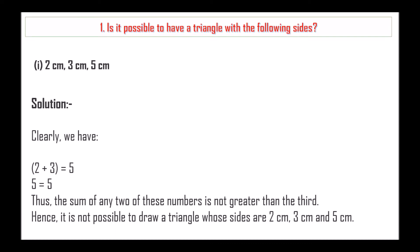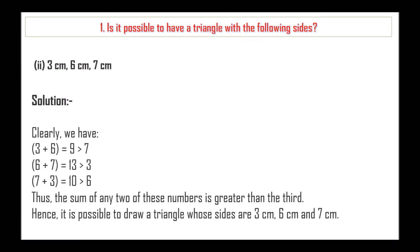The first one: the sides are 2 cm, 3 cm, 5 cm. Let's solve it. 2 plus 3 equals 5, so 5 equals 5. Thus the sum of any two of these numbers is not greater than the third. Hence it is not possible to draw a triangle whose sides are 2 cm, 3 cm and 5 cm.